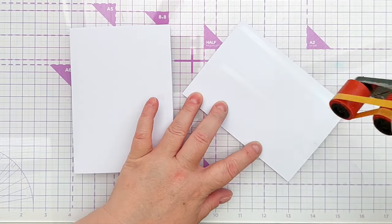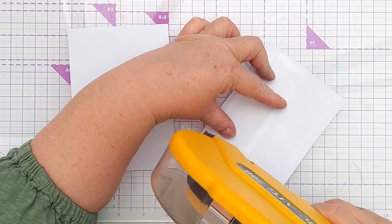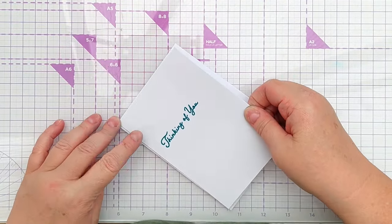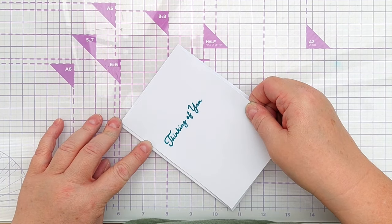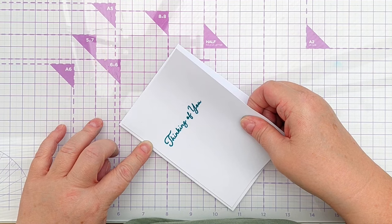Next I put my card panel on my card front using tape runner. I'm going back to using tape runner rather than glue to adhere my panels to the front of my cards because I still find with glue I do get a lot of warping of the card blank which I don't like.